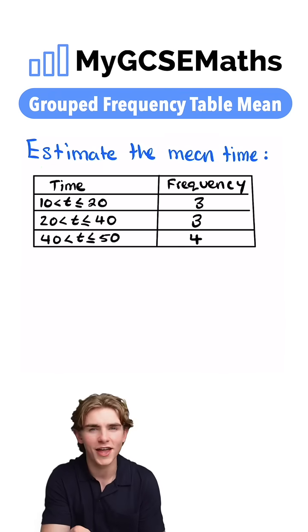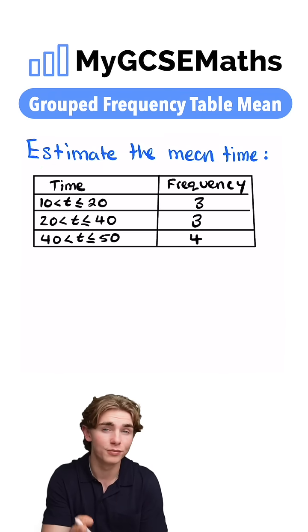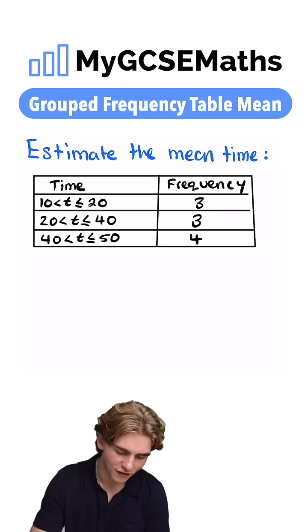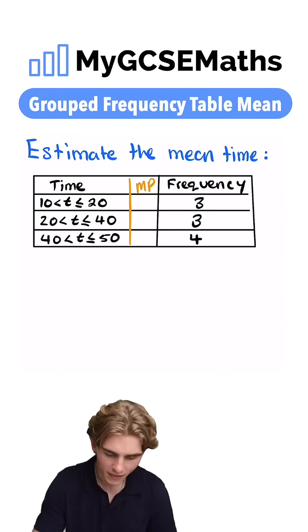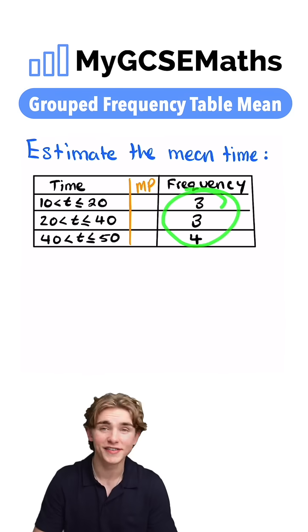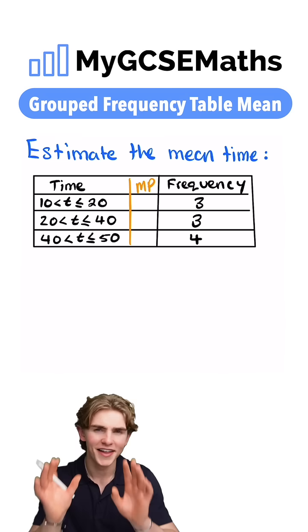How are we going to do this? We're working out the mean from a grouped frequency table. We'll first find the midpoint of our intervals, then multiply that by our frequency, and divide it by our total frequency. Let's get on with it.